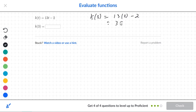Well 13 times 3 is 39, subtract 2. So from here we're going to get an answer of 37. So k of 3 is equal to 37.